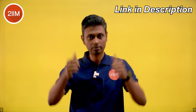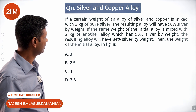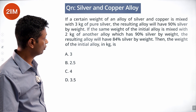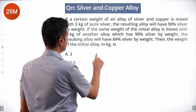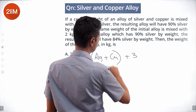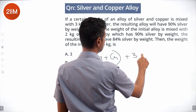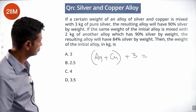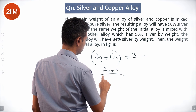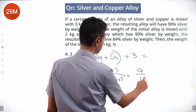If a certain weight of an alloy of silver and copper is mixed with 3 kg of pure silver, the resulting alloy will have 90% silver by weight. So: (Ag + 3) / (Ag + Cu + 3) = 9/10.